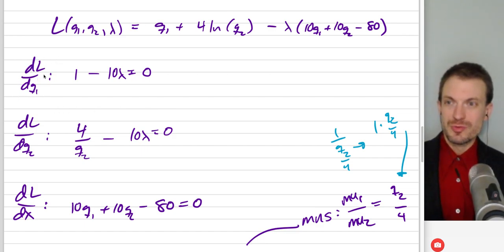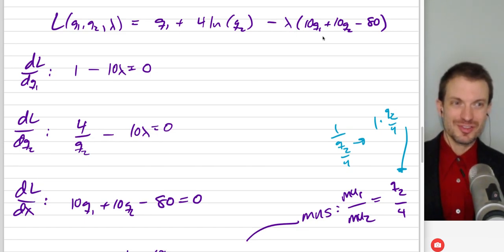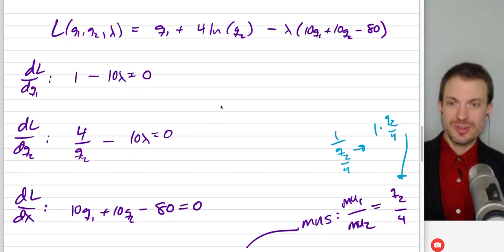Now I've taken the partials with respect to Q1. So that's just one partial over here. This is going to just be 1 minus 10 lambda equals zero. And then the partial with respect to Q2. Remember the derivative of natural log is just one over the argument. So derivative of this is going to be one over Q2 times this four. So it's going to be 4 over Q2, and minus 10 lambda. The derivative with respect to lambda, that's just the constraint portion. So you're always just going to get the budget constraint.